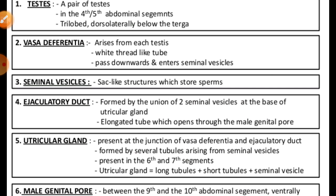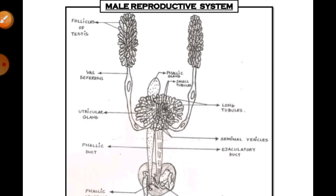The external genitalia are represented by the phallomeres — chitinous asymmetrical structures surrounding the male gonopore.